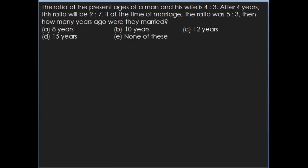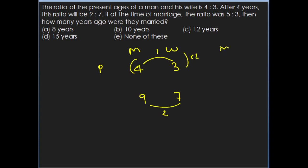The last question: the ratio of the present ages of a man and his wife is 4 is to 3. After 4 years this ratio will be 9 is to 7. Since the same quantity is increased on both sides, the difference between the two ratios must be the same. The difference in the present ratio is 1, and in the future ratio is 2. So multiply the present ratio by 2 to make differences equal.